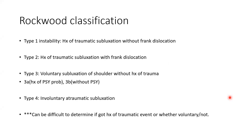In the Rockwood classification, there are four types. Type 1: history of traumatic subluxation without frank dislocation. Type 2: traumatic subluxation with frank dislocation. Type 3: voluntary subluxation without any history of trauma, subdivided into 3a (with psychological problem) and 3b (without psychological problem). Type 4: involuntary atraumatic subluxation. It can be difficult to determine if the patient had any history of a traumatic event, or whether the dislocation is voluntary or not.